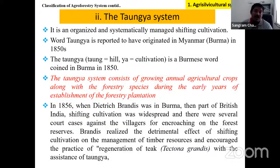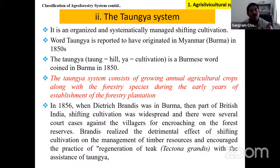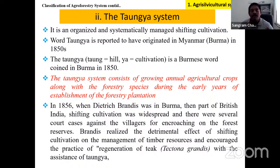The Taungya system was developed to reduce shifting cultivation and manage shifting cultivated land systematically. Taungya is a Burmese word coined in the 1950s — Tong means hill and Ya means cultivation. The Taungya system consists of growing annual agricultural crops along with forestry species during the early years of establishment. It was first started by Dietrich Brandis, also known as the father of Indian forestry, in 1856.